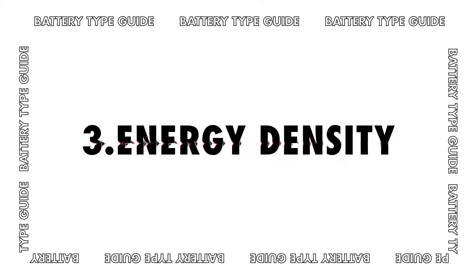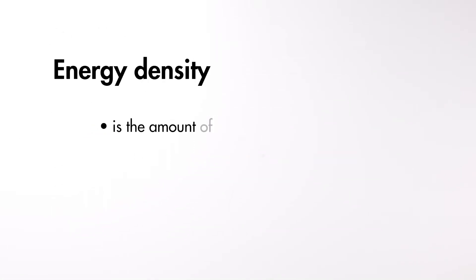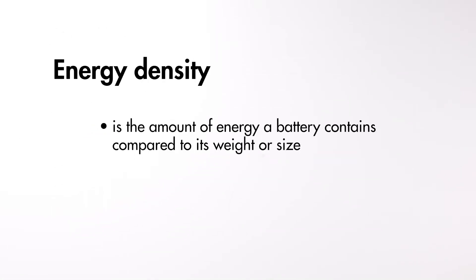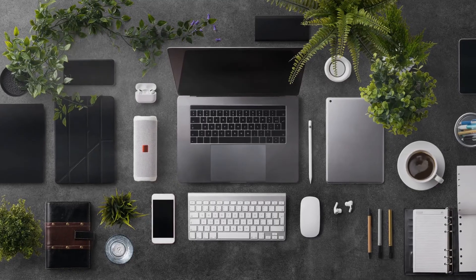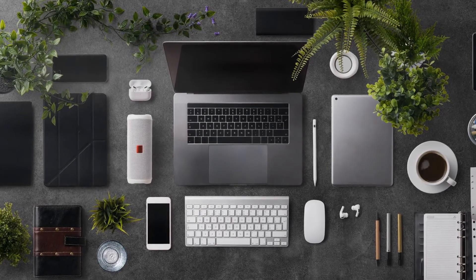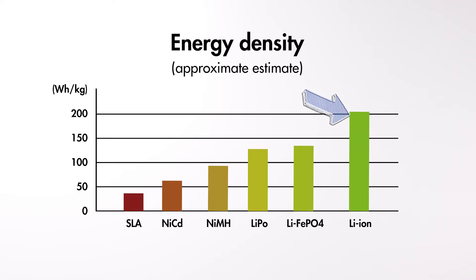After learning the form of each battery type, we'll need to take their energy density differences into consideration. Energy density is the amount of energy a battery contains compared to its weight or size. Higher energy density means the battery has a longer runtime with a smaller size. This is helpful when buying or building a custom battery pack where you don't have a lot of room but need a lot of power — some example devices are smartphones, laptops, tablets, and drones. Among the six types we mentioned, lithium ion batteries have the highest energy density.